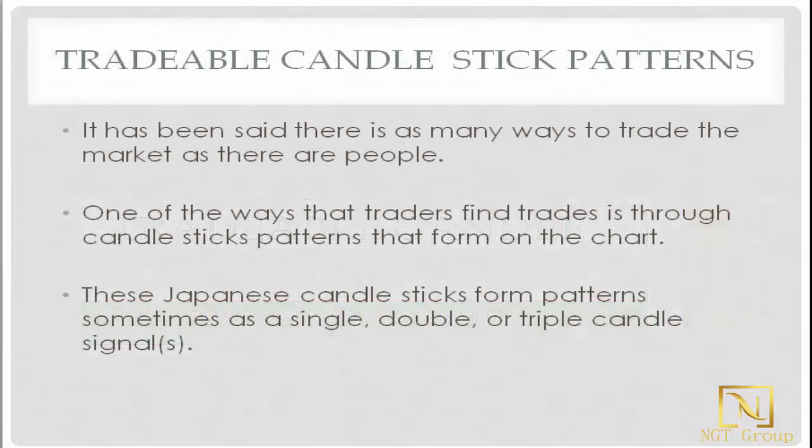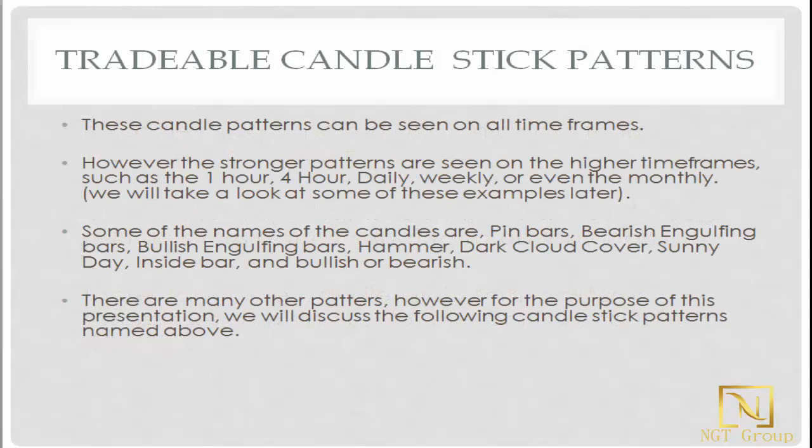It has been said there are as many ways to trade the market as there are people. One of the ways that traders find trades is through candlestick patterns that form on the chart. These Japanese candlesticks form patterns sometimes as a single, double, or triple candle signal, and these candle patterns can be seen on all time frames.